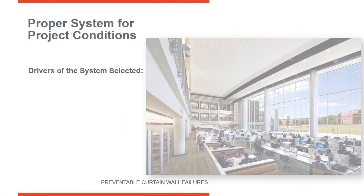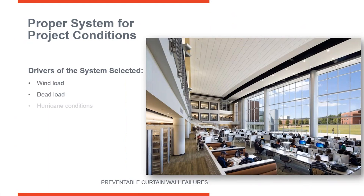When you start looking at a project, there are many drivers that influence what system you select. With curtain walls, there are many different options, and they're all driven by one particular driver or another. Some are designed for high thermal performance, some for hurricane areas, some for blast mitigation. The drivers include wind load, dead load, hurricane conditions, high velocity wind, blast, seismic, environmental conditions, code conditions, budget, and aesthetics.